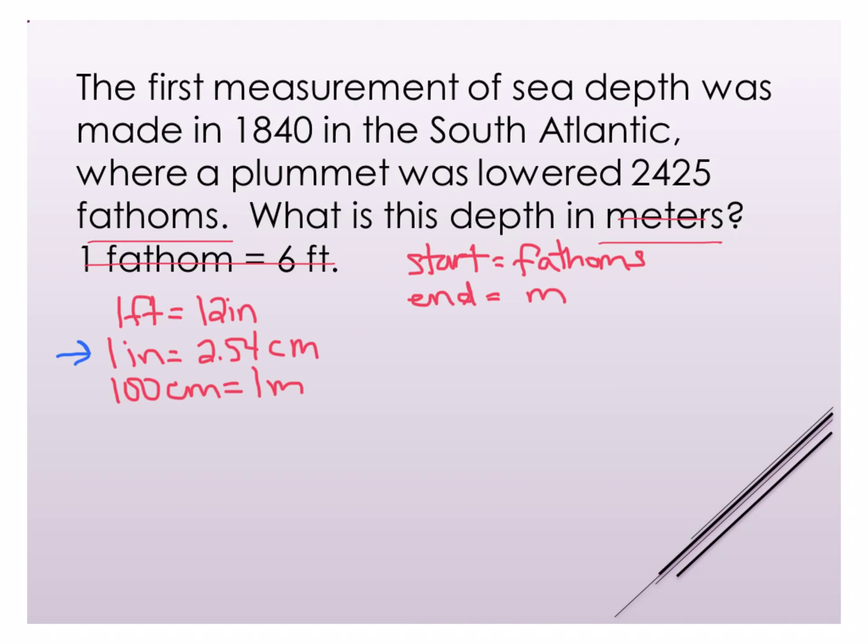So now just like in simpler problems we're going to start by putting what we are given, what number we start with and we're only really starting with one measurement so it's not too hard to figure out where we're going to start. So we have 2425 fathoms.